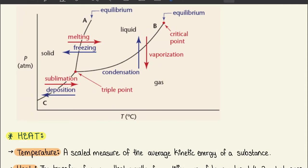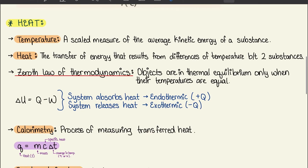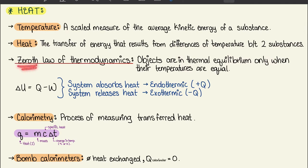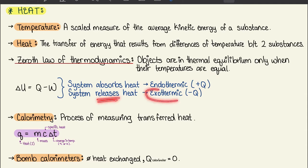Moving on to 7.3 — heat. Temperature is a scalar measure of the average kinetic energy of a substance, whereas heat is the transfer of energy resulting from temperature differences between two substances. The Zeroth Law of Thermodynamics states that objects are in thermal equilibrium only when their temperatures are equal. When a system absorbs heat it is endothermic (positive q); when it releases heat it is exothermic (negative q).